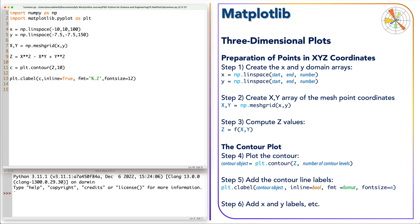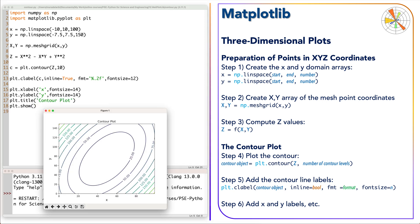Finally, we can add the axis labels and a title. Let's run the code. As you see, we got the contour plot of the equation over the area of the XY plane.